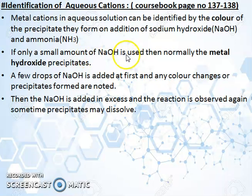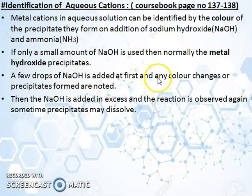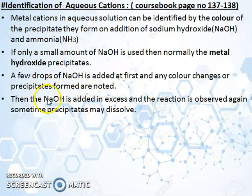If only a small amount of NaOH is used, the metal hydroxide precipitates. Precipitation means there is a solid formation that is not soluble in liquid — that part is called the precipitate. A few drops of NaOH are added first and then the color change is observed, along with formation of precipitate. But if we put more NaOH, the reaction is observed and sometimes the precipitate may dissolve. So if we put too much, the precipitate which is forming may get dissolved.